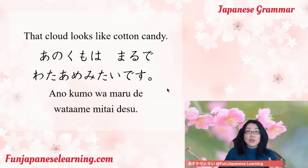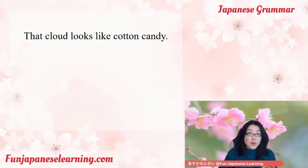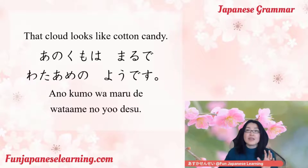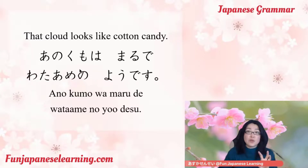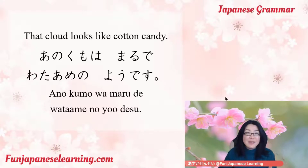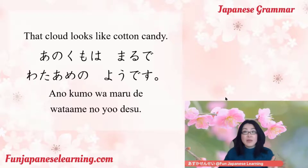You can also use yo desu: ano kumo wa maru de watame no yo desu. Since watame is a noun, you need to use no with yo desu — watame no yo desu. Ano kumo wa maru de watame no yo desu. Both sentences have the same meaning, but mitai is for conversation and yo desu is for written text.